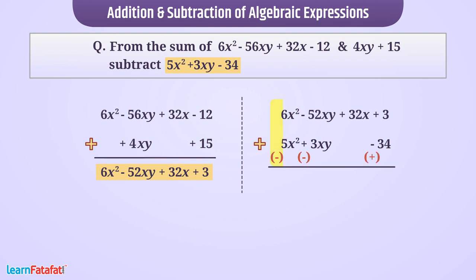So addition of 6x square and minus 5x square is x square. Similarly, addition of minus 52xy and minus 3xy is minus 55xy. Likewise, we will get the result as x square minus 55xy plus 32x plus 37.